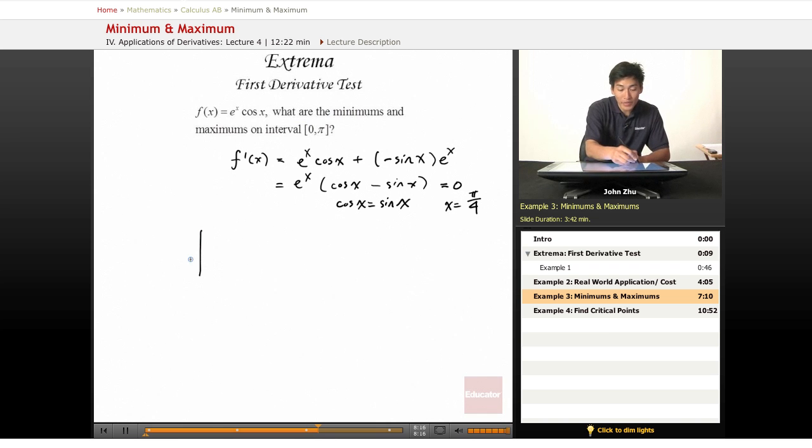So let's go ahead and see what that means by testing the intervals around that. We know that pi over 4 is one value, 0 is the other bound, and pi is the other bound.